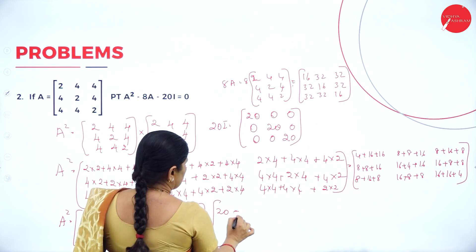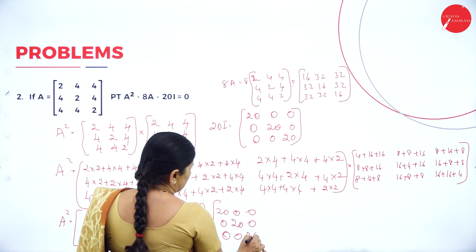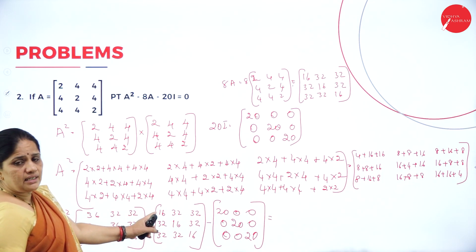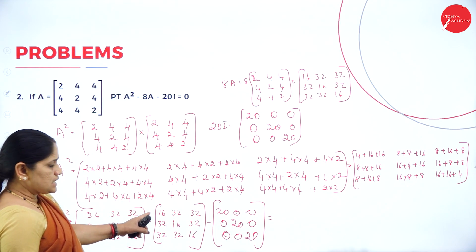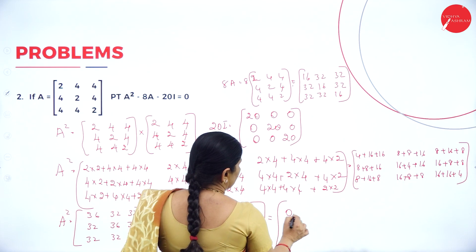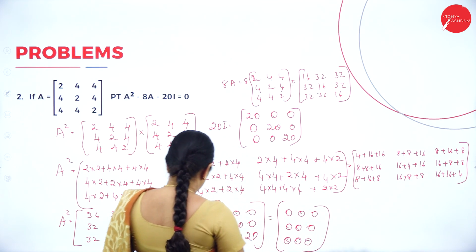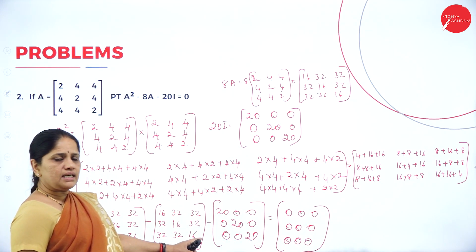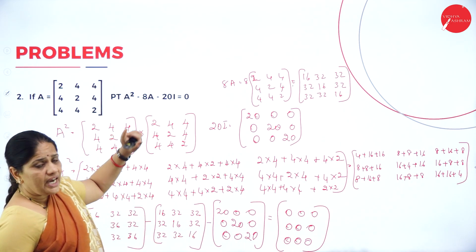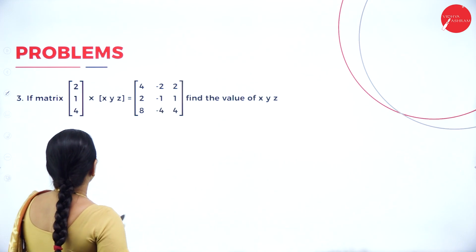So this will be equal to: 36 minus 16 minus 20 equals 0. So we get all the elements as 0. We have proved that A squared minus 8A minus 20I equals 0.